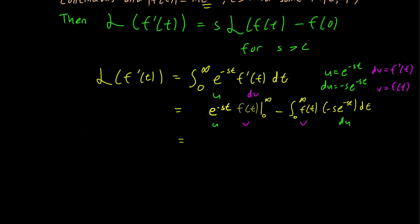So this is going to be the limit as b goes to infinity of e^(-sb) f(b) minus f(0), since e raised to 0 is 1. And this integral is just going to be equal to plus s times the integral from 0 to infinity of f(t) e^(-st) dt.